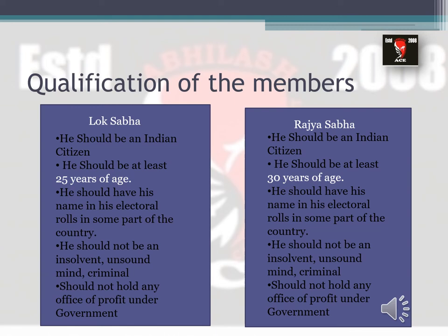A person with a criminal background may have malicious intent or cause harm to society, making them unfit to handle the parliament. Additionally, the member should not hold any office of profit under the government — the major objective of a government is social welfare, and any personal interest or office of profit may contradict that welfare objective and harm the growth of the nation.